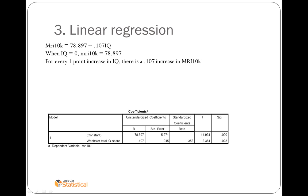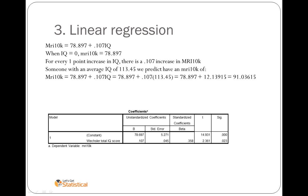We can then predict from the line. If we took the average score, for example, substituted it into the equation, we would predict their MRI 10K to be 91 based on an average IQ of 113.